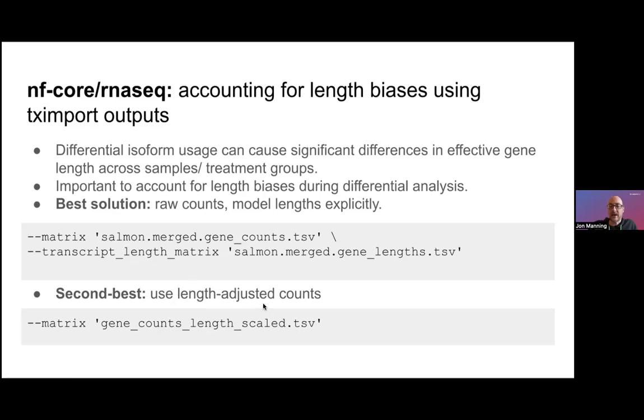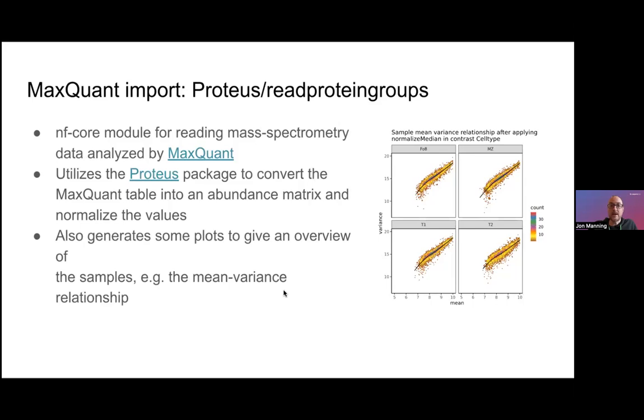There is now a proteomics pathway through the workflow built by Oscar. And that allows you to take data produced by MaxQuant, use the Proteus package to convert that table into abundance matrix and normalize that matrix, and then pass that matrix into all the downstream differential analysis and reporting that I've just quickly mentioned.